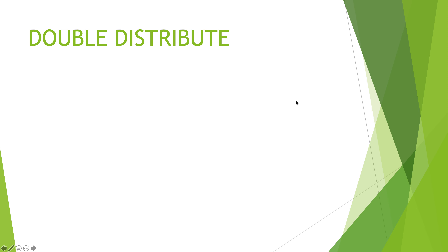As we continue to delve into our reverse engineering way of doing things, we need to distribute before we factor. Likewise, when it comes to trinomials we need to double distribute first. Your teacher in high school may have called this FOIL, and I cannot impress upon you how strongly I detest that name. FOIL stands for First, Outers, Inners, Last, but it makes it sound like a gimmick. This is not a gimmick — this is a very sound, logical mathematical principle.